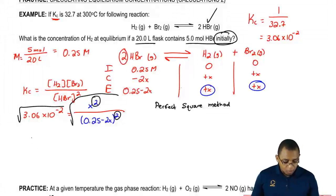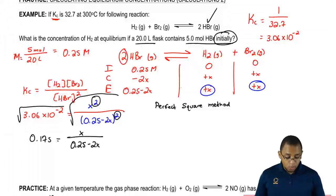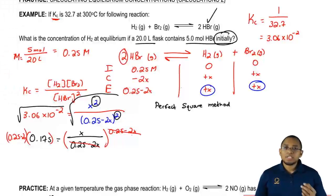That's going to mean my answer now is 0.175 equals, taking the square root of those squares just gets rid of the squares. So it's going to be x over 0.25 minus 2x. Multiply both sides by 0.25 minus 2x. Now you're going to distribute.